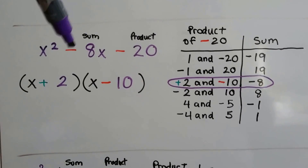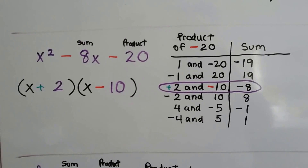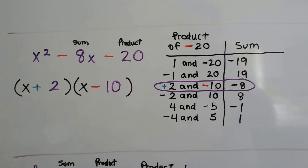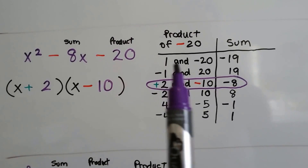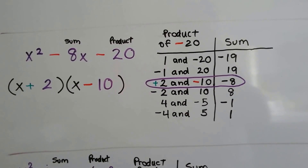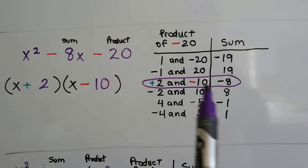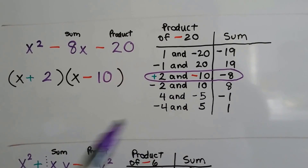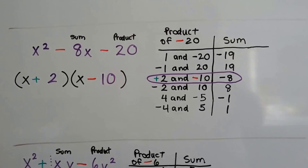Now we've got two negatives: negative 8x and negative 20. We need a product of negative 20 and a sum of negative 8. We start listing in our factoring table all the products of negative 20: 1 and negative 20, negative 1 and 20, positive 2 and negative 10. When we add them: 1 and negative 20 makes negative 19; negative 1 and 20 makes positive 19. Positive 2 times negative 10 gives us negative 20, and when we add them together we get negative 8 — just like we needed. So we have plus 2 and minus 10. The factoring table tells us which sign to use.